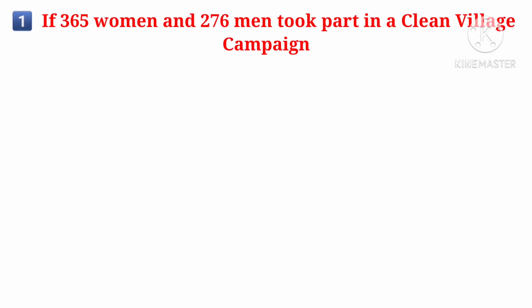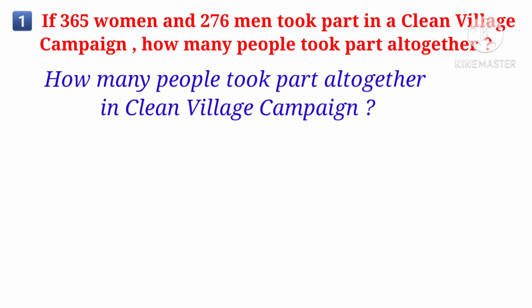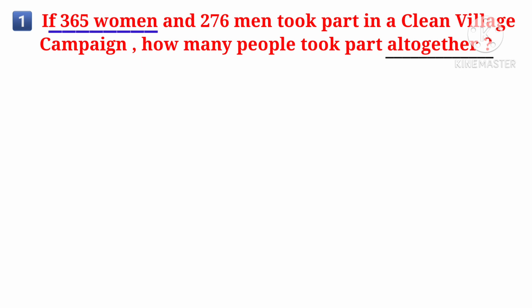We have a word problem here. If 365 women and 276 men took part in a clean village campaign, how many people took part altogether? The question is: how many people took part altogether in the clean village campaign? We see the word 'altogether', so we need to find how many women and men took part in the clean village campaign altogether — meaning we need to add these two.